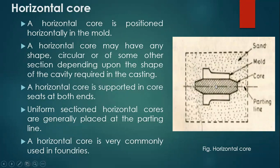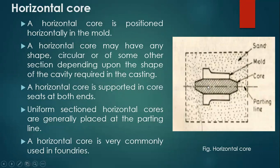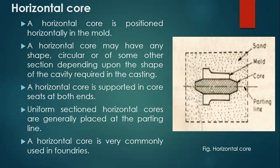The hatching line is the core, which is made up of sand — that sand may be green sand, shell sand, dry sand, or CO2 sand. By using any one of these sands we can prepare this core. The function of this core is to make the casting hollow. I can place this core at any desired position to prepare a hollow casting, which is the purpose of using cores in the foundry industry. This core is removed from the final casting by breaking.